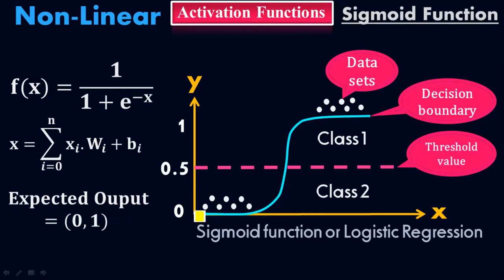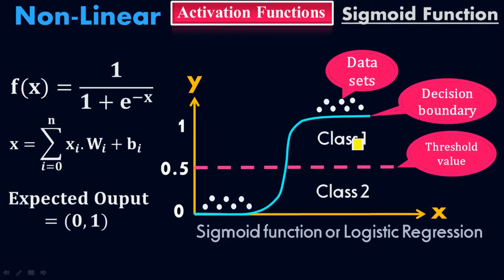Looking at the graph, we have 0 and 1 as boundary values, with a threshold value of 0.5. Above the threshold we have class 1, and below the threshold we have class 2. These are the datasets and this is the decision boundary. Sigmoid function divides the data into two classes — that's why it is also called logistic regression.